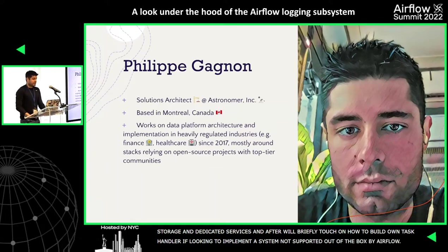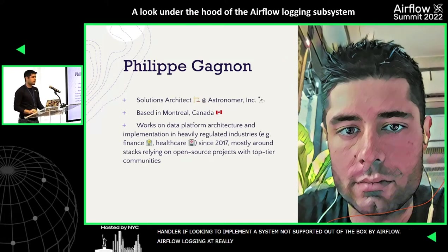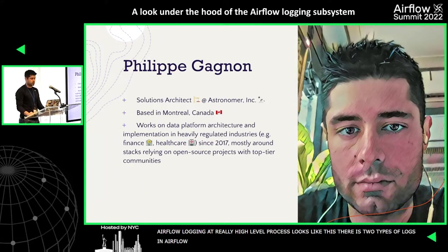Airflow logging at a high level: essentially, there are two types of logs in Airflow. There are the Airflow components themselves — such as the web server, the scheduler, and the workers — and those logs go to the root logger, which by default will output to the console.